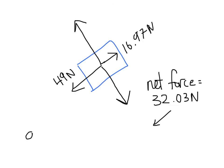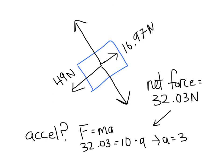So when we go to find the acceleration of the block down the plane using Newton's second law, F equals ma, we substitute in. Now in Newton's second law, F equals ma, that force is the net force acting on the object, whatever it is. So in this case it's 32.03 newtons. Sorry for not writing the units in here. And mass was 10 kilograms times acceleration, yielding an acceleration of 3.2 meters per second squared.